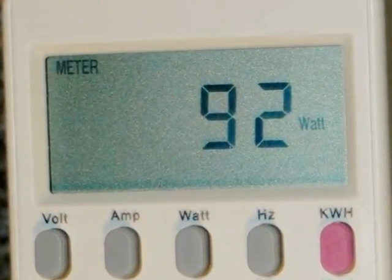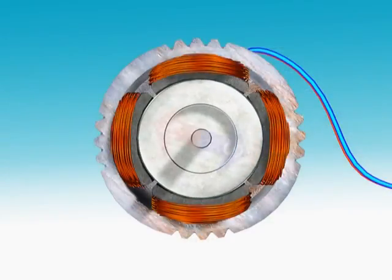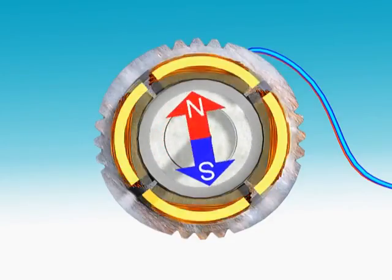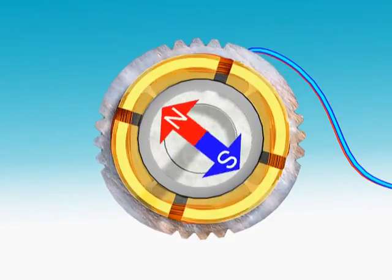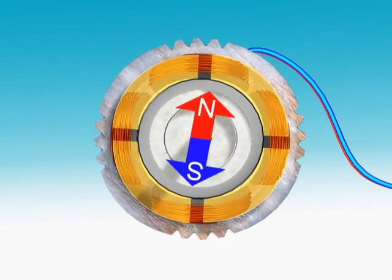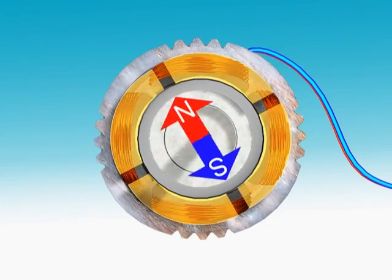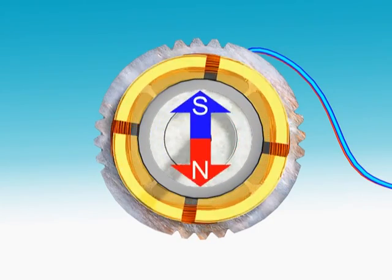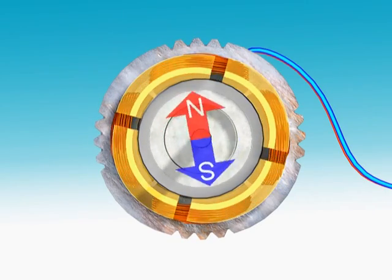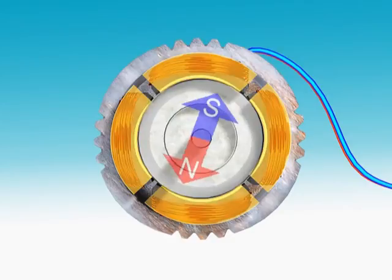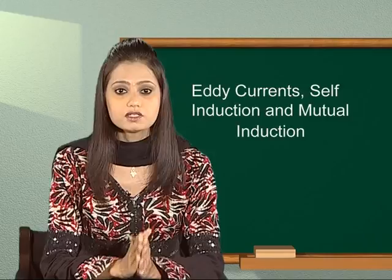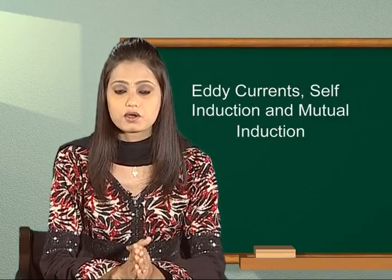In energy meters, the armature coil carries a metallic aluminum disc which rotates between the poles of a pair of permanent horseshoe magnets. As the armature rotates, the current induced in the disc tends to oppose the motion of the armature coil. Due to this braking effect, the deflection is proportional to the energy consumed.